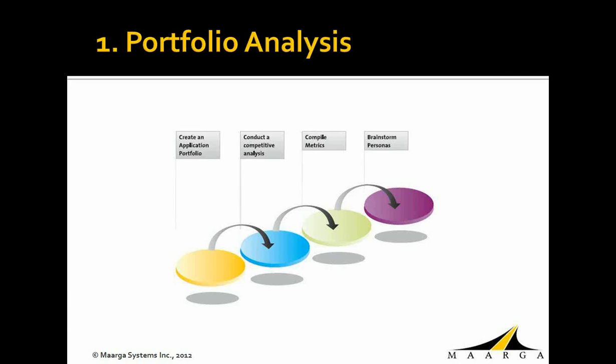It is also very important to identify different personas — such as power users who are the major users of the system. We need to document the different kinds of users who are actually using each application. When choosing the candidate for the pilot run, all these aspects will be very helpful in deciding which application to first enable for mobile. Tools available in the market can make this process easier, especially when an organization has thousands of applications.